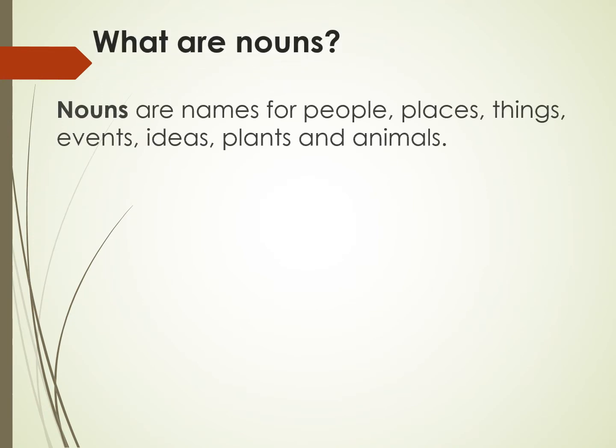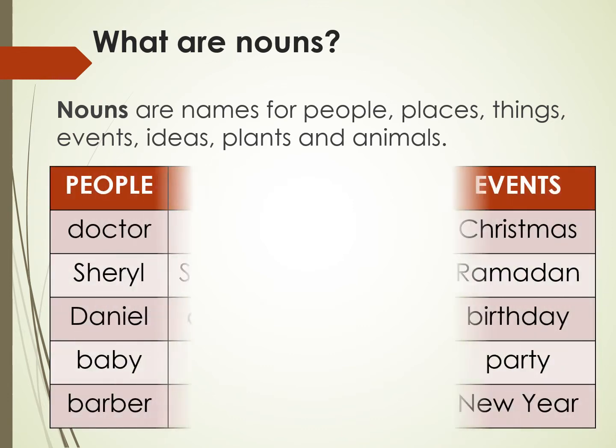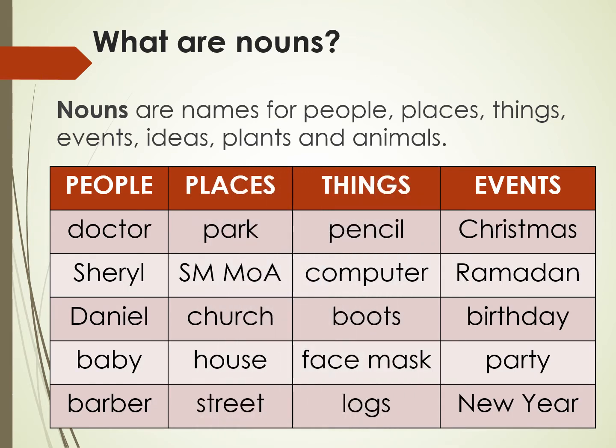Nouns are names for people, places, things, events, ideas, plants, and animals. Some examples of these are: